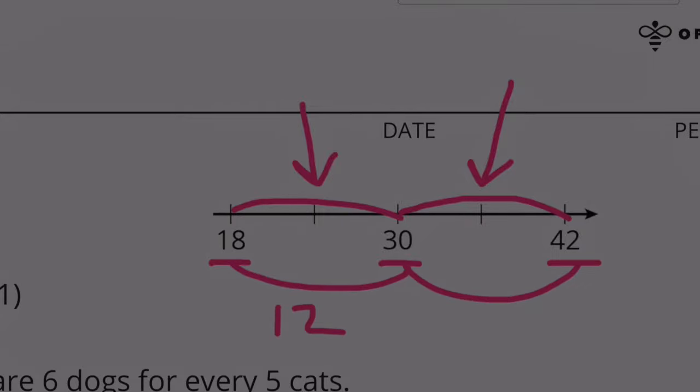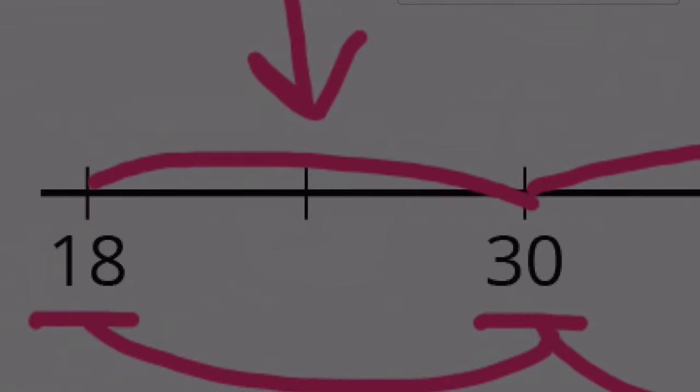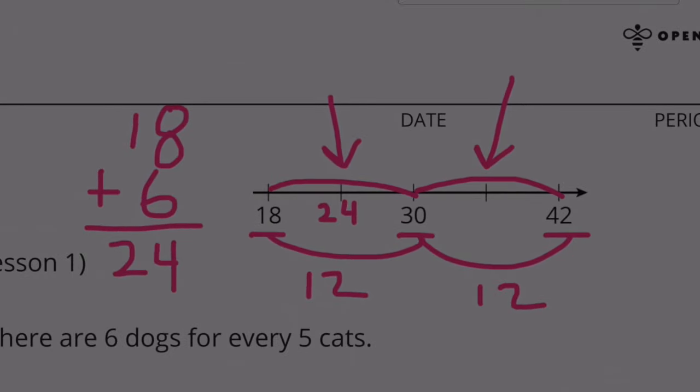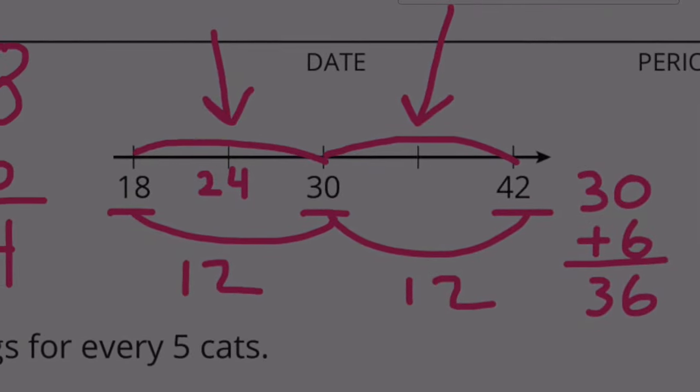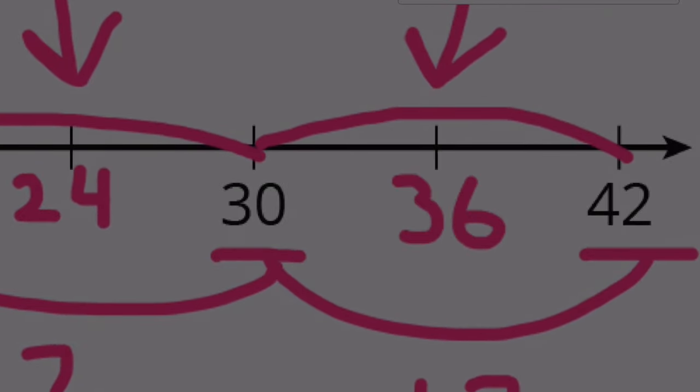When they go from this point to this point, that's 12. And then from 30 to 42, that's 12. If we were going to go halfway from 18 to 30, that would be adding half of 12. What's half of 12? Six. So 18 plus 6 more would bring us to 24. So this tick mark would be the 24 spot. Halfway between 30 and 42 would be adding half of 12. So what's 30 plus half of 12? 36. So underneath this tick mark, we're going to need a 36.